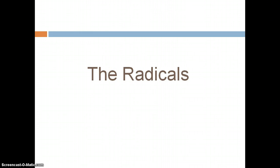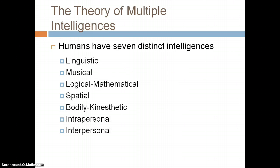The final approach is the radicals. This is the theory of multiple intelligences — there are seven of them. Some key ones that most people in our class would recognize are logical-mathematical, interpersonal, musical, and bodily-kinesthetic. This is also part of a new wave of how people approach learning in classrooms.